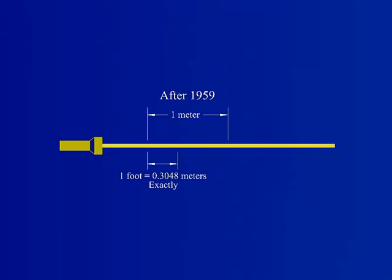After the conference in 1959, the conversion between the SI system and the U.S. customary system became 1 foot is exactly equal to 304.8 millimeters or 0.3048 meters.